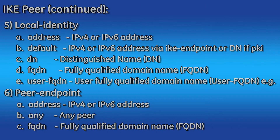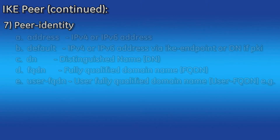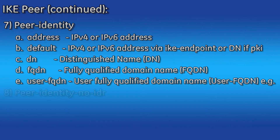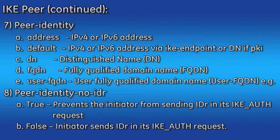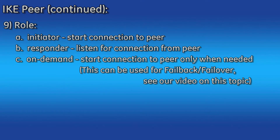Under peer endpoint, just like local endpoint, you have address, any, and FQDN. Under peer identity, just like local identity, you are given the same options. The peer identity no IDR setting can be true or false. If true, this prevents the initiator from sending the IDR in its IKE auth request and allows it to verify the configured identity against the subject and subject alt names in the responder certificate. Otherwise, it is only compared with the IDR returned by the responder. The final parameter under IKE peer is role, which can be initiator or responder. The initiator will start the connection to the peer, whereas the responder will listen for a connection.